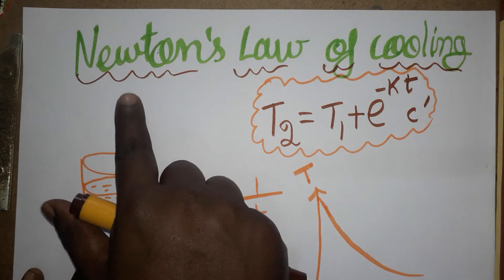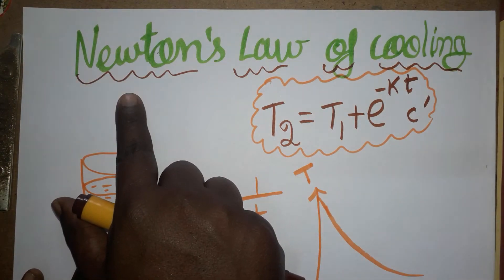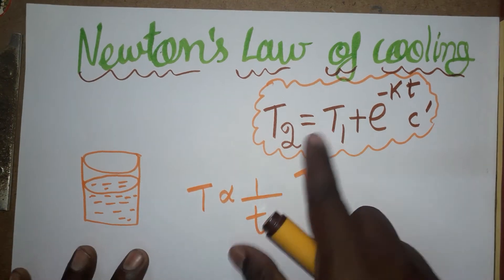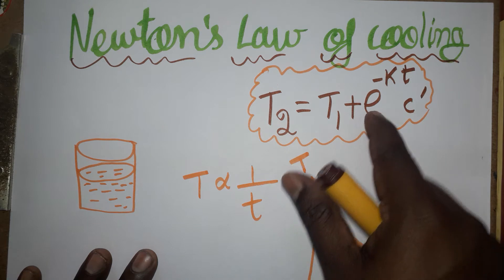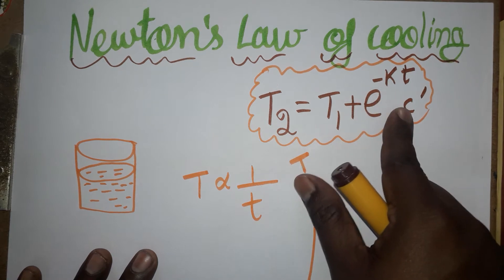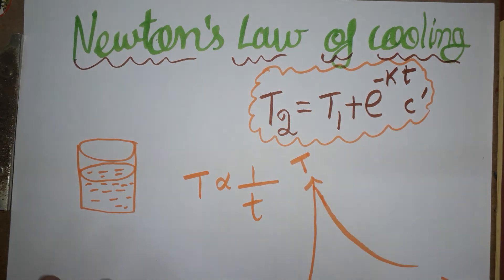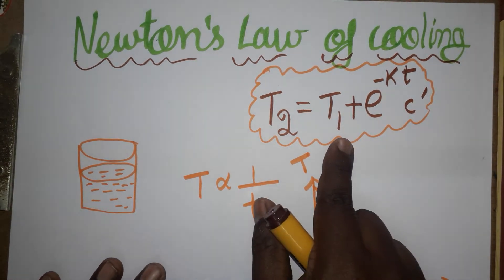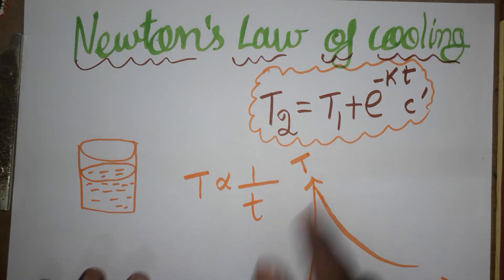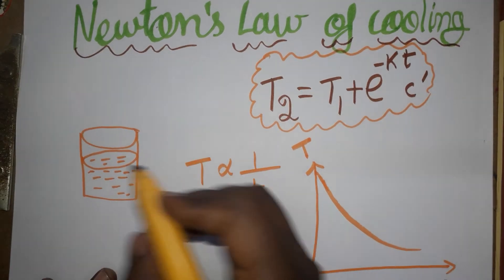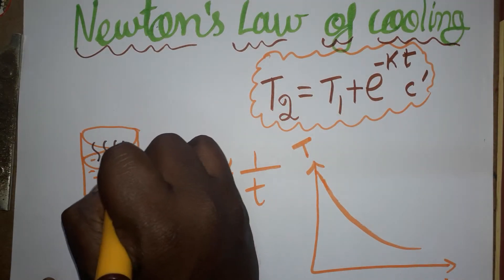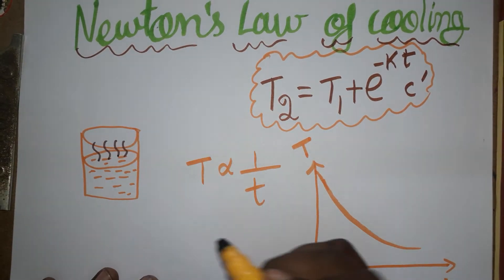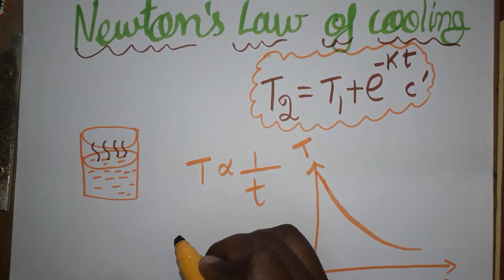Hello students, today we are going to learn how to derive the formula for Newton's Law of Cooling: T2 is equal to T1 plus e to the power of minus kt, times C dash. This is the equation we are going to derive. I have hot water in a beaker here — it's a very simple experiment.